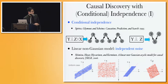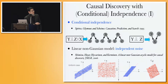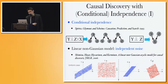Ten years ago, people started using structural equation models to do causal discovery. Here you can see the linear non-Gaussian model. If you go beyond the linear Gaussian model, very often you can uniquely recover the underlying causal structure. Using linear functions and non-Gaussian distributions, for the correct causal direction the noise will be independent from the predictor, but for the wrong direction they are uncorrelated but dependent. That's why we can distinguish between different causal structures with the same conditional independence relations.